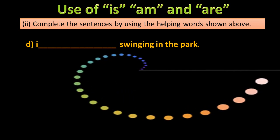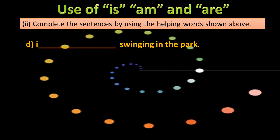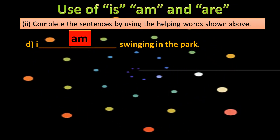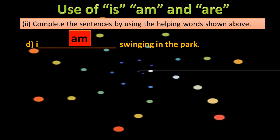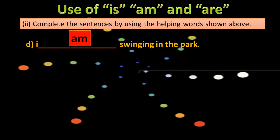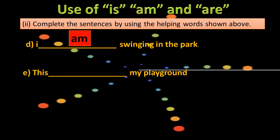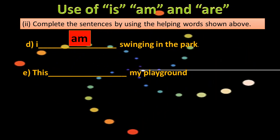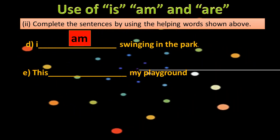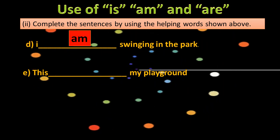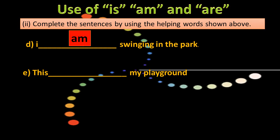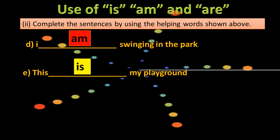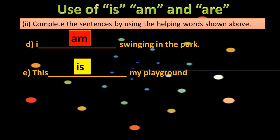The fourth sentence: I dash swinging in the park. Yahan pe 'I' ka istemal ho raha hai to is ka matlab 'am' aaye ga kyunke yahan hum apne bare mein baat kar rahe hain. Next, the last sentence: This dash my playground. Yahan ek playground ki baat ki ja rahi hai, singular. To yahan 'is' aaye ga. This is my playground.